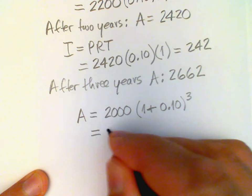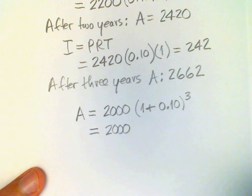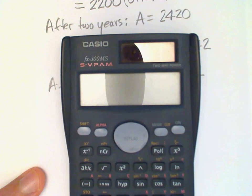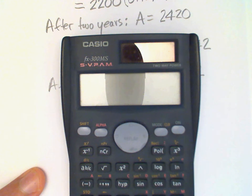This is 2,000 times, and then in order to raise numbers to a power on your scientific calculator, you're going to need this key right here. That's what we use for that purpose, and I will compute that first.